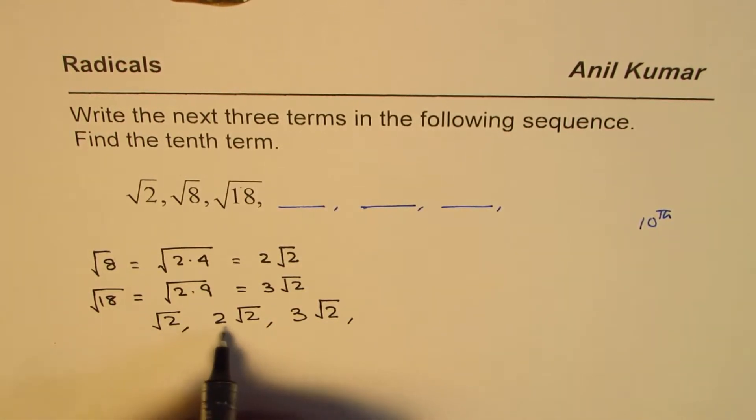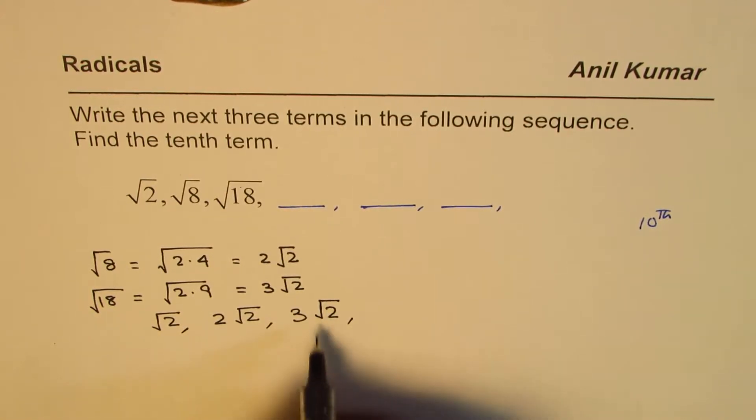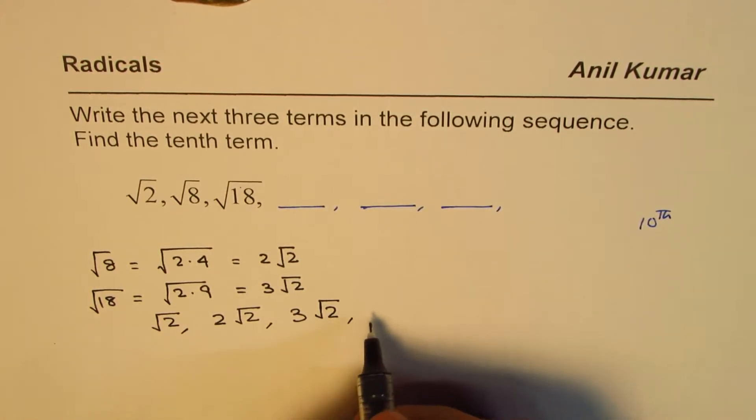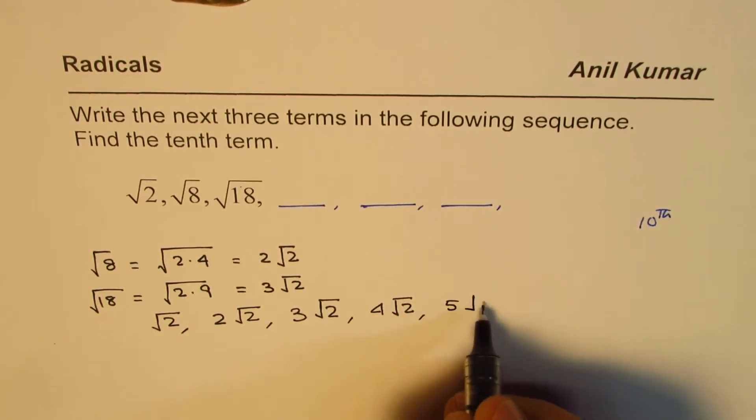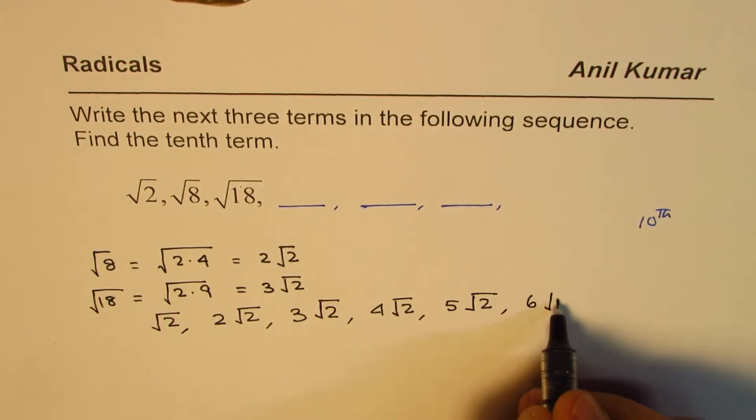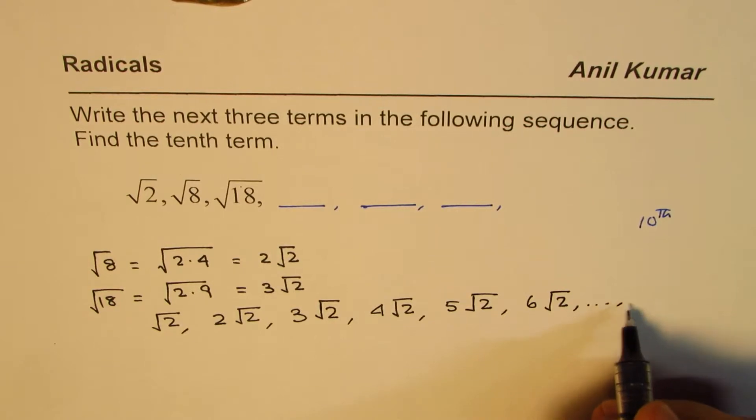So the next three terms should be: this is like 1 times square root of 2, 2 times square root of 2, 3 times square root of 2, so the fourth term is 4 square root of 2. The 5th one is 5 square root of 2, the 6th one is 6 square root of 2, and in that case the 10th will be 10 square root of 2.